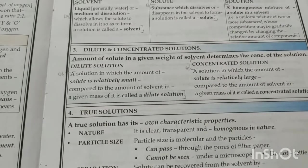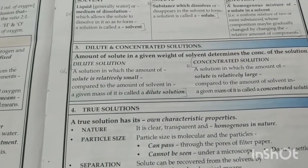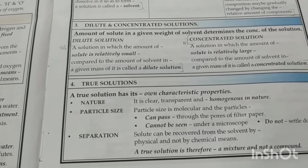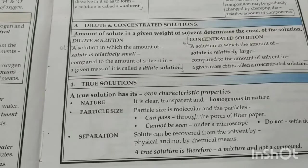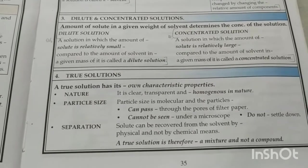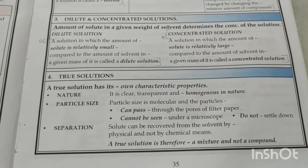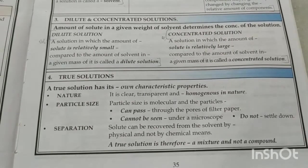Solutions may be true solutions or they may be colloids. Colloids look like a solution, but under a microscope we discover that the solute is not dissolved completely in the solvent. A true solution will be totally homogeneous even under a microscope because the particles are so small they cannot be seen. They will not settle due to sedimentation nor can they be filtered out even with an ultra filter. The only way to separate the solute is by physical means like evaporation.